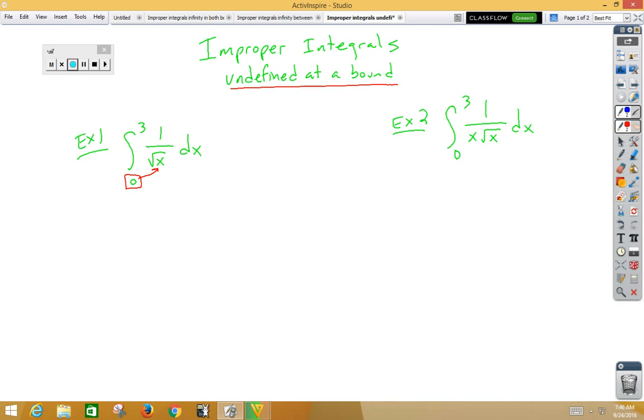So we're going to have to replace that temporarily with L, and we're going to approach 0. Now, notice the bounds are from 0 to 3. So if we think about a number line from 0 to 3, when we approach 0, we're going to be approaching 0 from the right side.